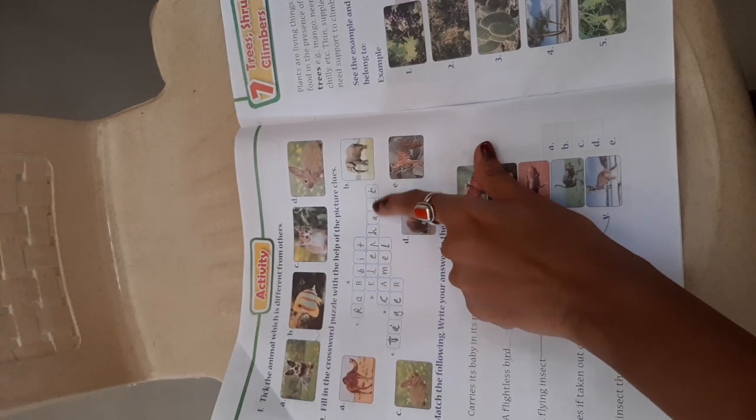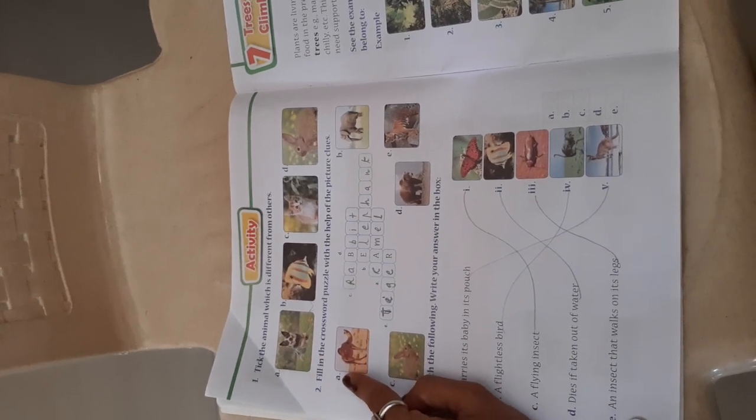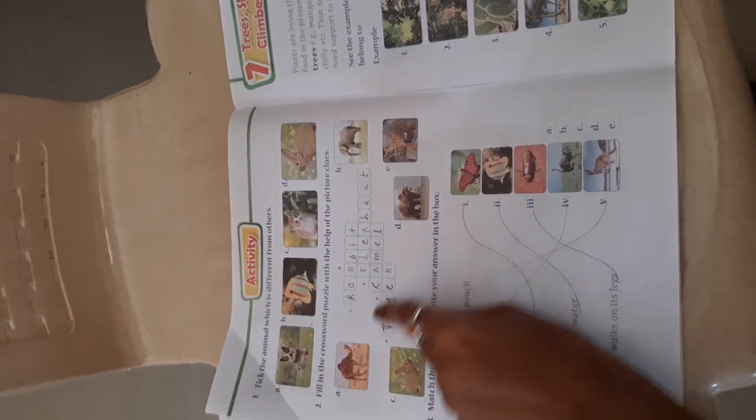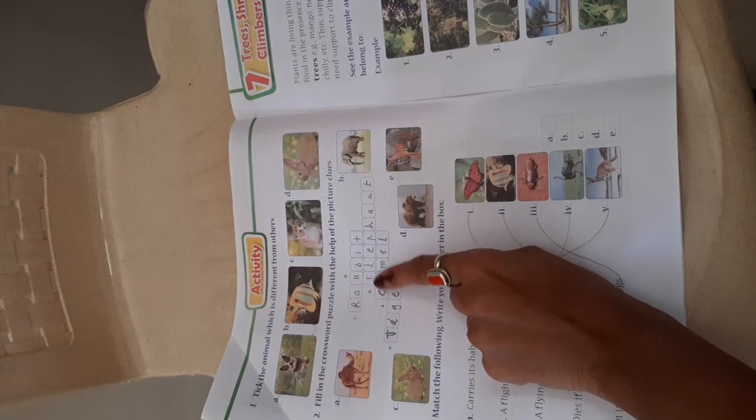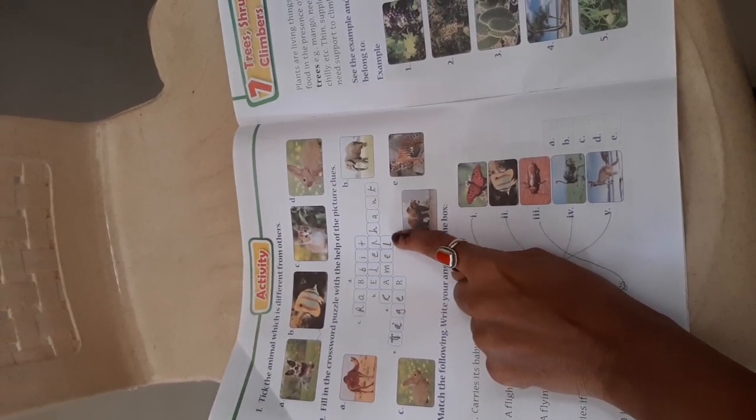In this crossword, in the cross line, write elephant. Then, you can see picture A is of camel. So in the cross line, you have to write down the spelling of camel.